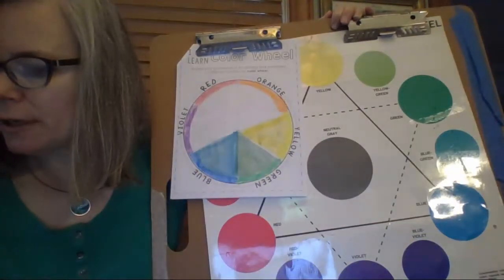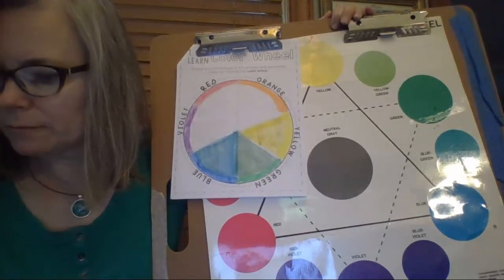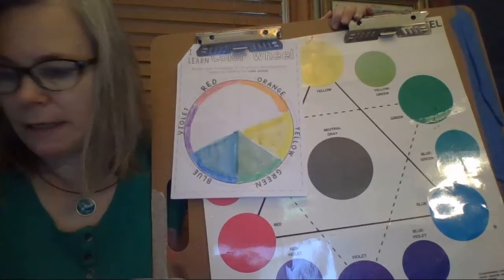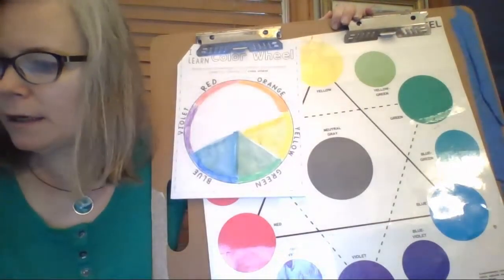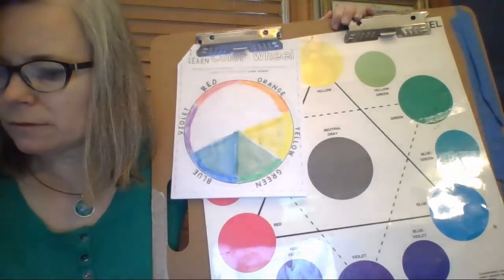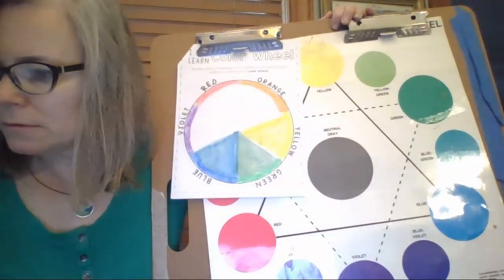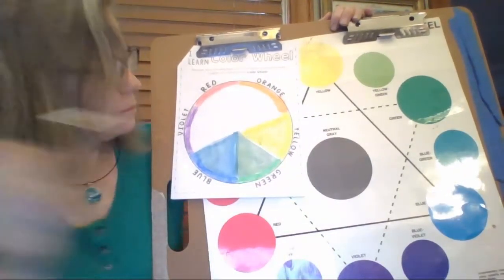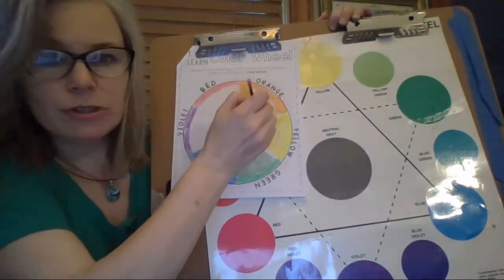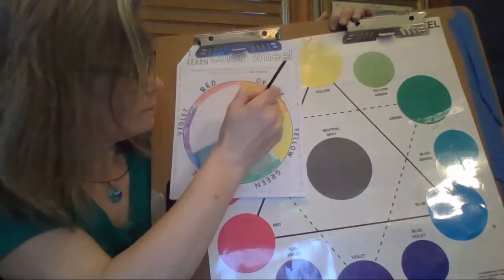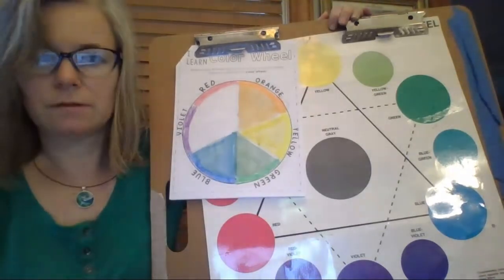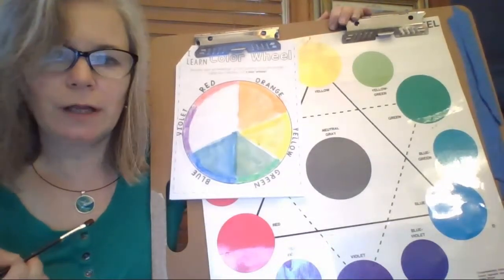I'm going to do the same thing with the orange. I'm going to take a little yellow and put it on the lid of my paint set. And I'm going to mix a little bit of red into that yellow. So I mixed and made this orange.